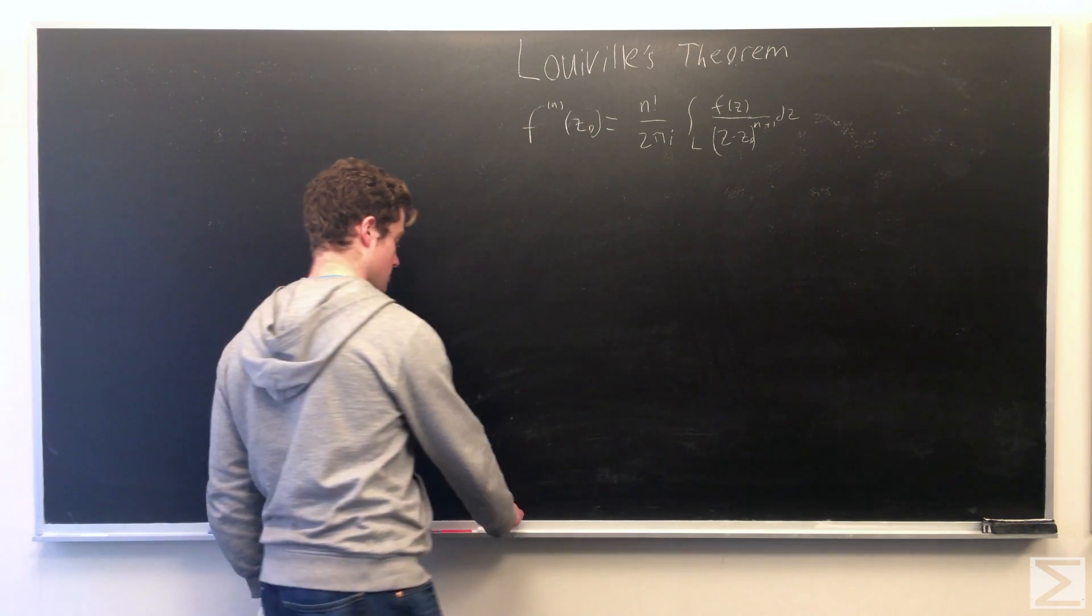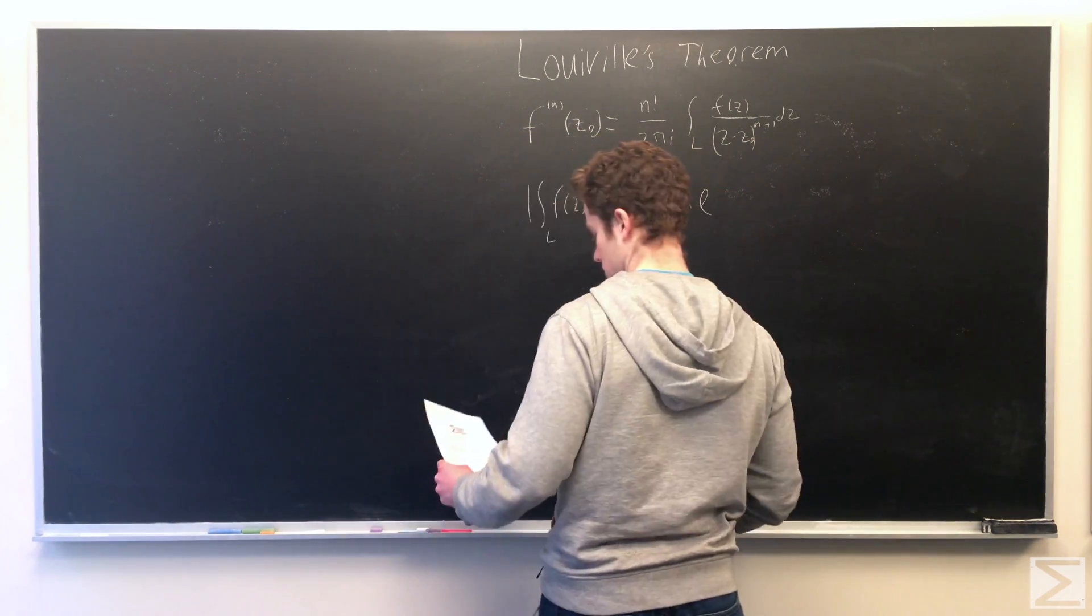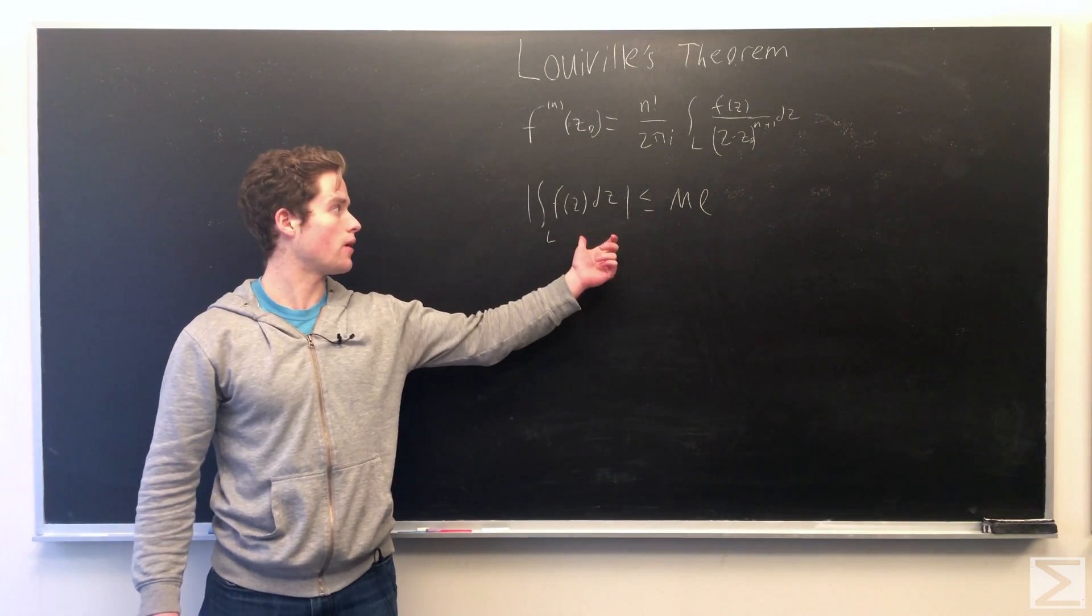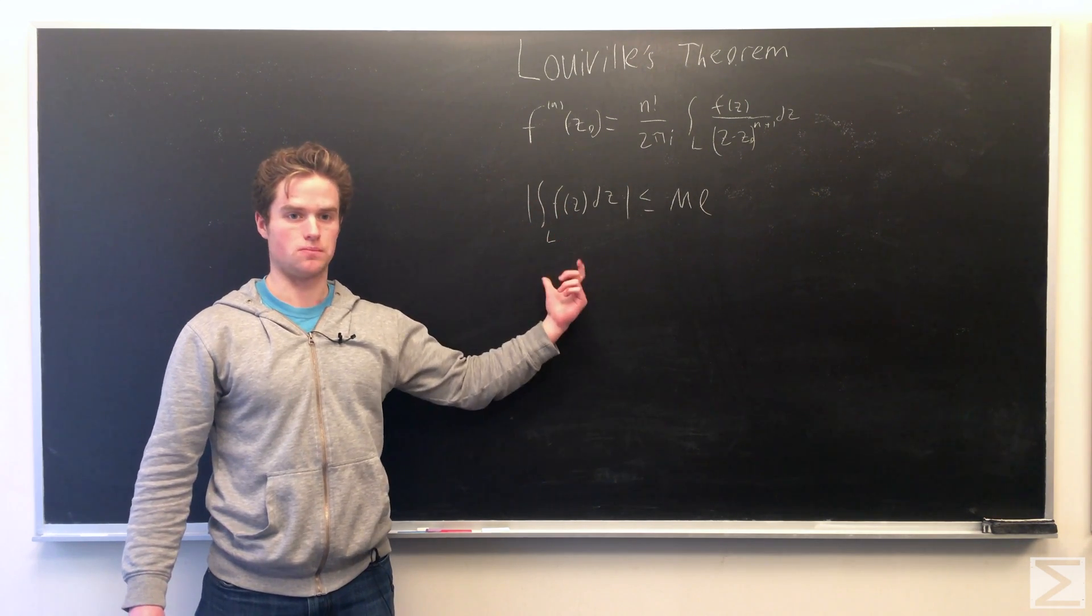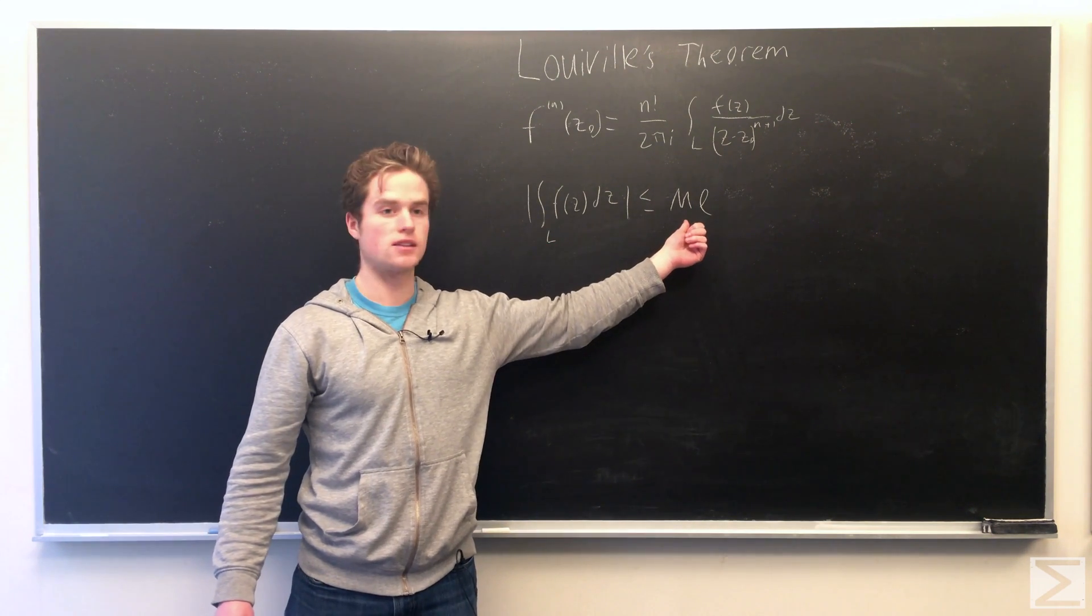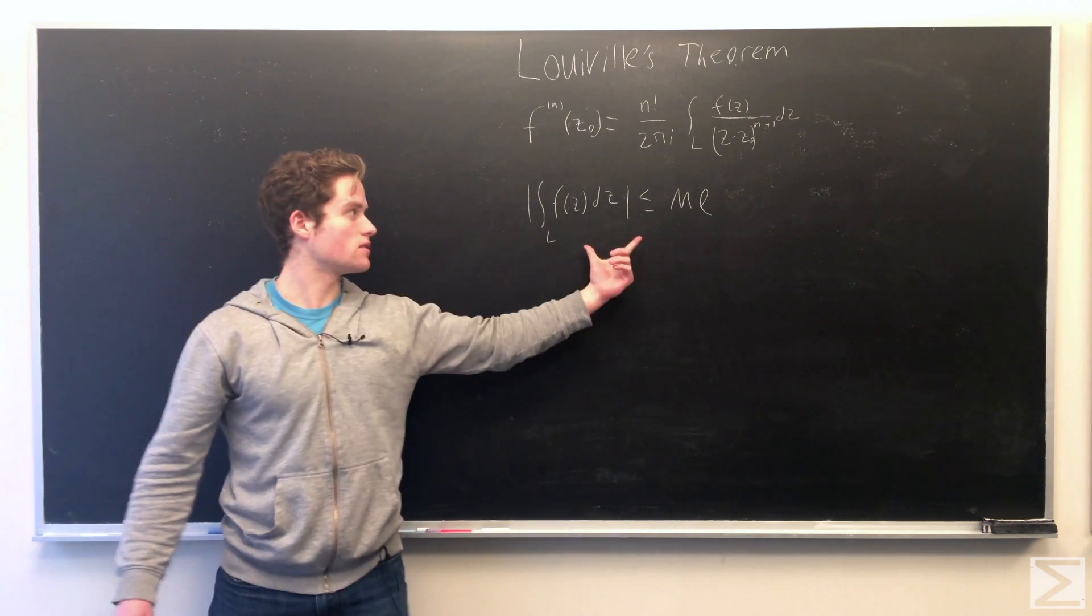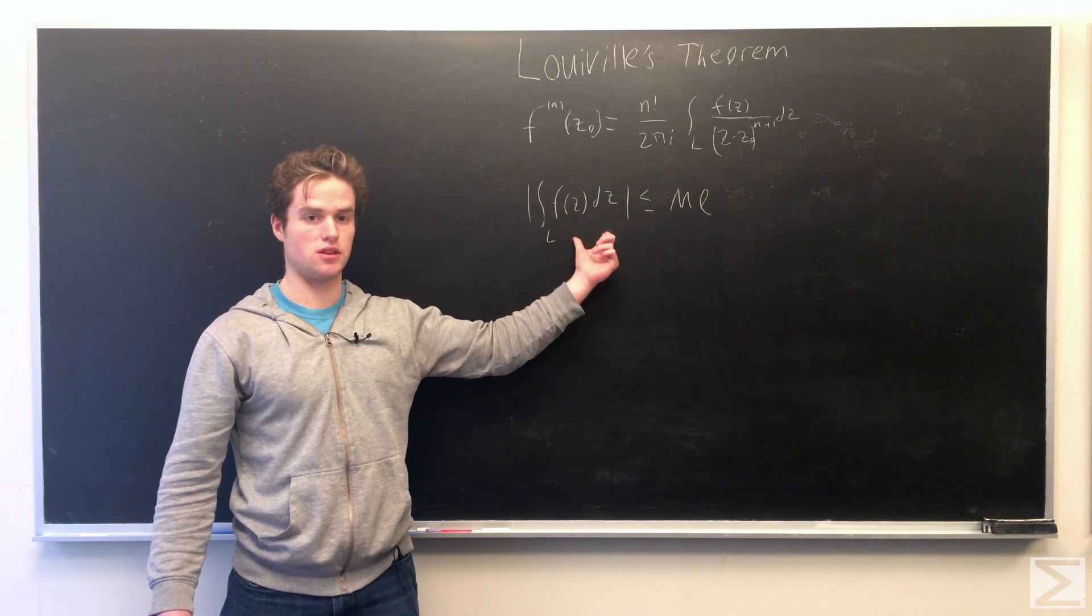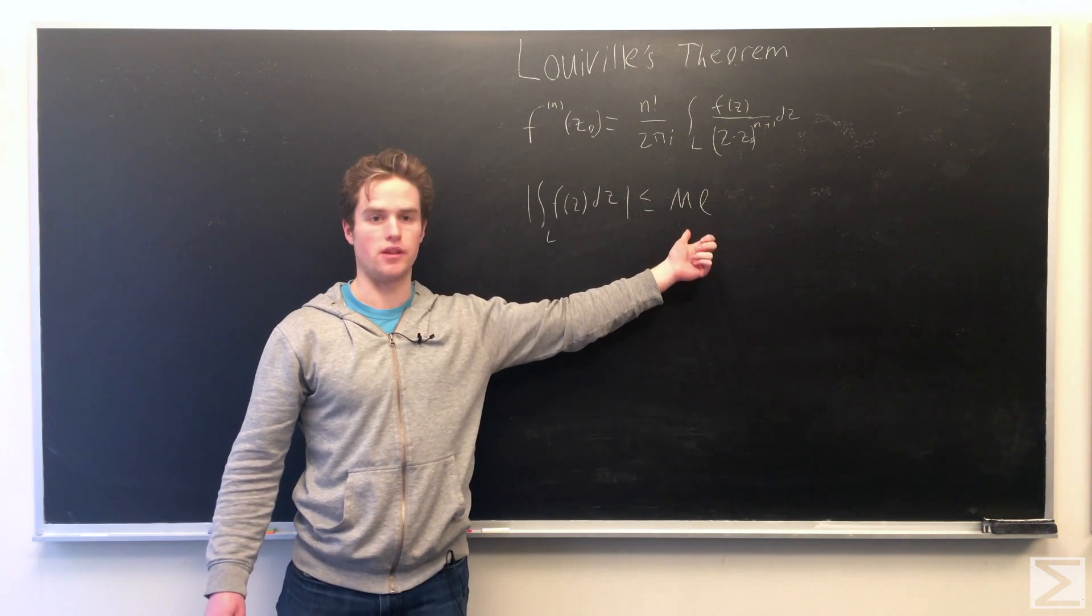One other thing we're going to need is this inequality, this upper bound for an integral over a curve. The integral of f(z) dz over some curve L, the absolute value of this is going to be less than or equal to the maximum modulus of f(z) on this curve times the length. This can easily be derived by writing this out as a limit of a sum and using the triangle inequality and knowing that it's bounded above by this.